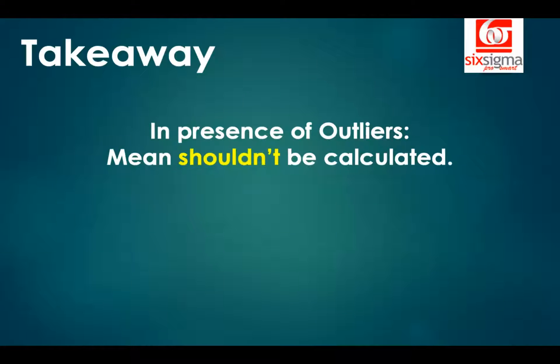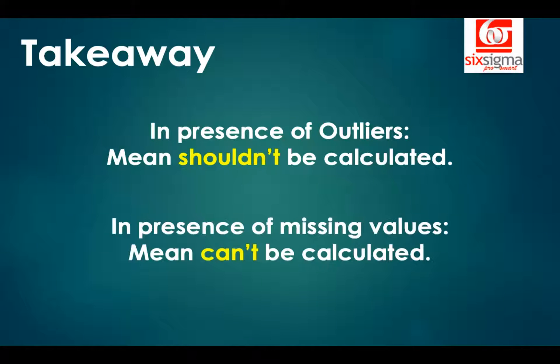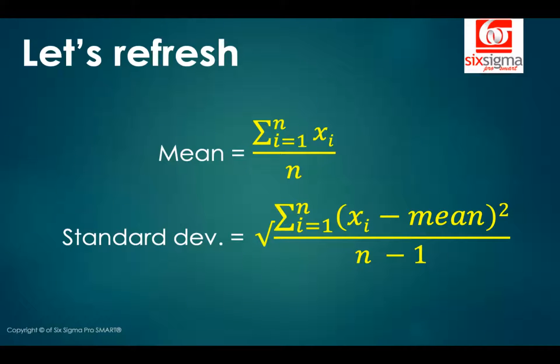You can calculate mean. It's feasible, but you should not calculate mean because it is inflated or deflated due to the presence of outliers. In the presence of missing values, mean can't be calculated because till the time I don't treat my data for missing values, mean will not populate. Let's further refresh the formula for mean and standard deviation. We know mean is a clear problem in the presence of outliers and missing values. Why is standard deviation a problem? Simply because standard deviation uses mean in its formula.